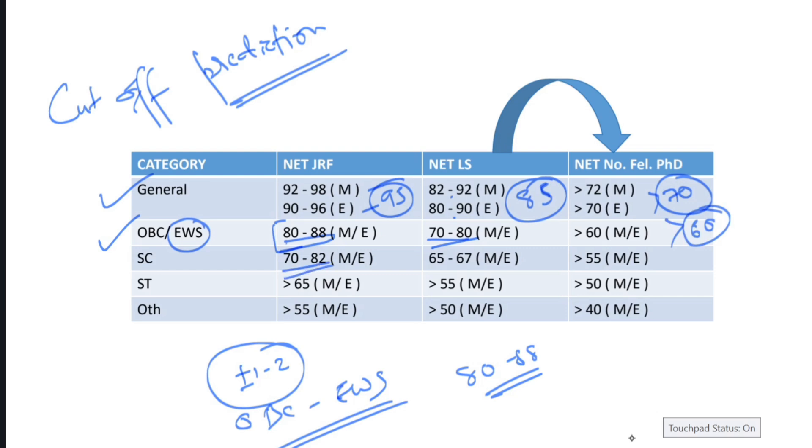For SC, it is between 70 to 82 for both morning and evening shifts. I have not created a difference because the pattern was almost the same. The difficulty level varied by only 0.5. Last time, the difficulty level varied between evening shift and morning shift by around 3.5, but this time it's only 0.5. The question paper level was almost the same, but the difficulty level was much higher in both cases. For ST, for NET LS it would be around 65 to 67. For only NET qualification, around 55. For ST, greater than 65 for NET JRF, greater than 55 for NET LS, greater than 50 for NET no fellowship. For others, like PW category, greater than 55 for NET JRF, greater than 50 for NET LS, and greater than 40 for NET no fellowship.